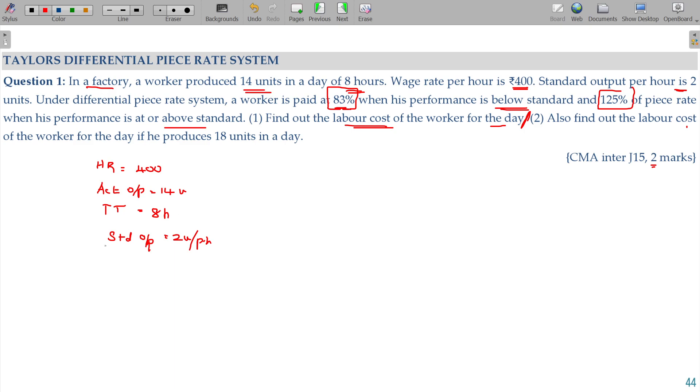We have to find out the performance rate. Performance rating in the form of the output based on the actual output divided by standard output. Actual output is 14. What is the standard output?